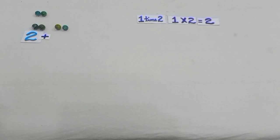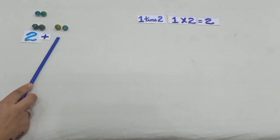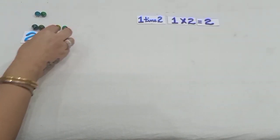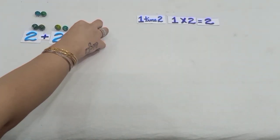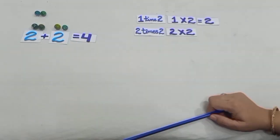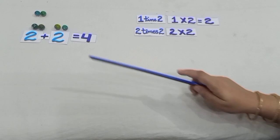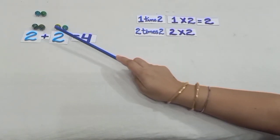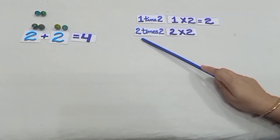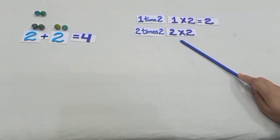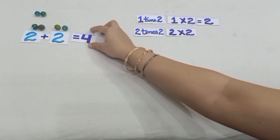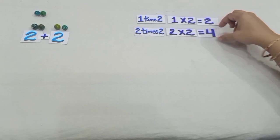Earlier we had 2 marbles and now we have 2 marbles more, so we have 4 marbles. We have 2 groups with 2 marbles in each group. That means 2 times 2, and we write it as 2 into 2, that is equal to 4.